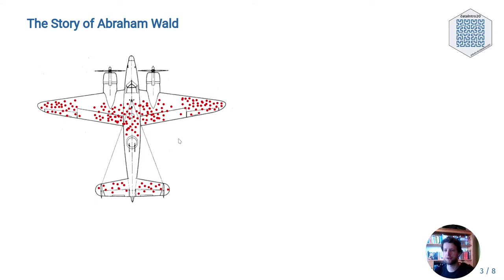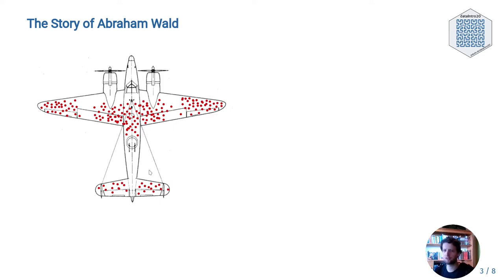After taking a look at the data they gathered, the military is ready to rush and reinforce. To improve the endurance of the aircraft, the plan is to reinforce the parts of the plane that were most often hit by bullets. With stronger wings and a sturdier body, they think surely more pilots will come back from their missions safely. They were wrong.